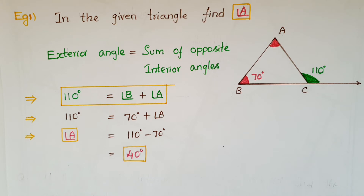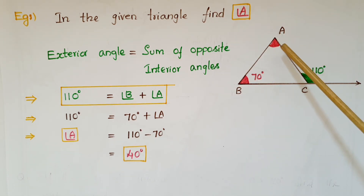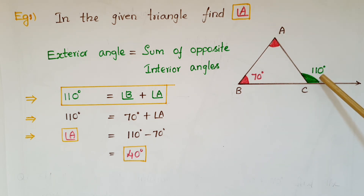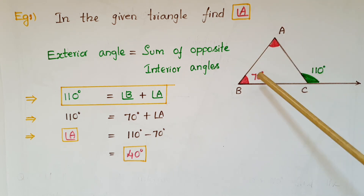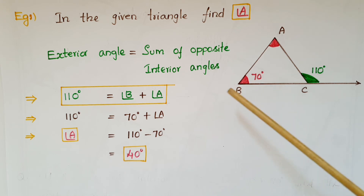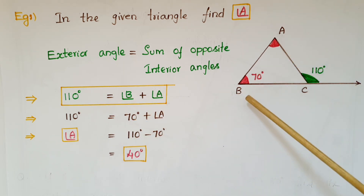Here is an example. In the given triangle ABC, find the value of angle A. We know that the exterior angle is equal to the sum of the opposite interior angles. The exterior angle is given as 110 degrees and one of the opposite interior angles is also given as 70 degrees. So we can write: 110 degrees equals angle B plus angle A.